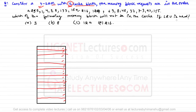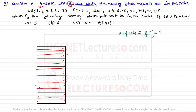Because it is a 4-way set associative cache, we need to find how many sets there are. The number of sets equals 16 divided by 4, which gives 4 sets. Every set will contain four lines.